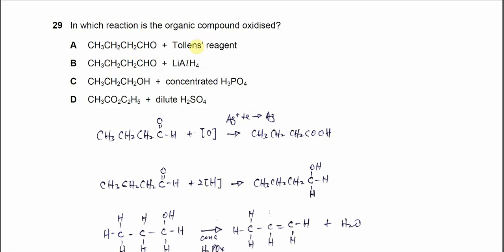We know that Tollens' reagent is a mild oxidizing agent which contains silver ions. The silver ion complex gets reduced to silver, which is why after the reaction, after the oxidation, we will see the silver mirror. The silver ion oxidizes the aldehyde and is itself reduced.